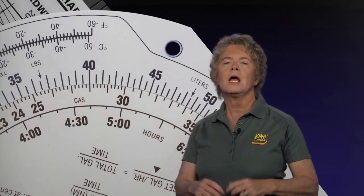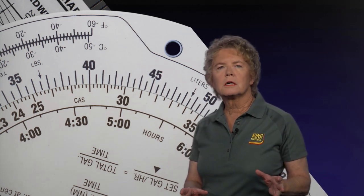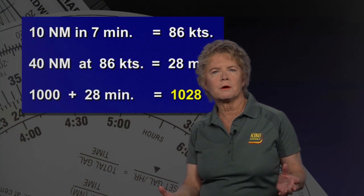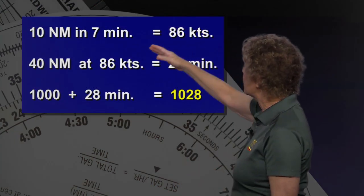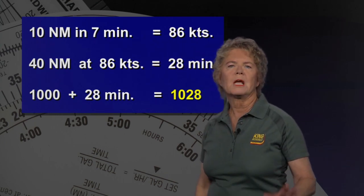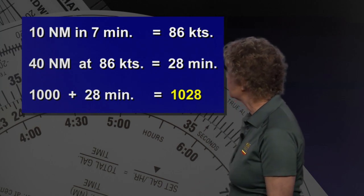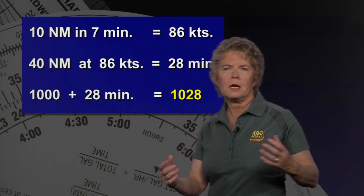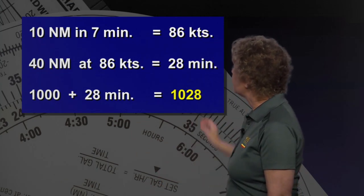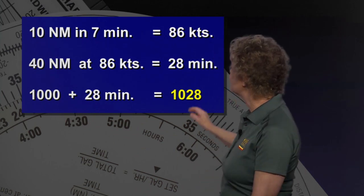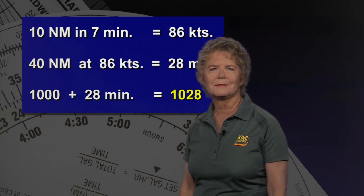Be sure to add that to the time you crossed your second checkpoint. Your second checkpoint was the 216 radial of Allendale, and you crossed it at 10 o'clock. So 10 o'clock plus 28 minutes puts you over the Savannah VOR at 10:28. To recap: we covered 10 nautical miles in 7 minutes, giving us a ground speed of 86 knots. We had 40 nautical miles to go from our second checkpoint to Savannah, and at 86 knots that takes 28 minutes. Adding 28 minutes to our time over the second checkpoint — 10 o'clock — gives us an arrival time at the Savannah VOR of 10:28.